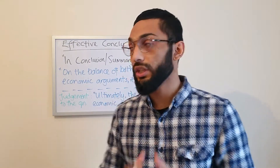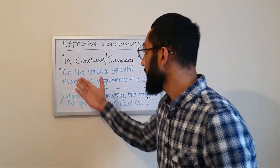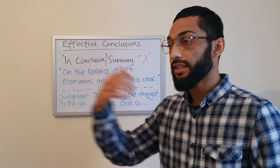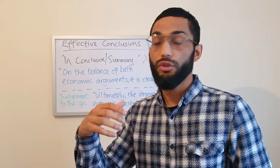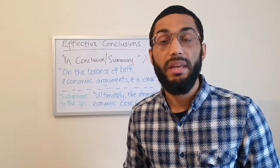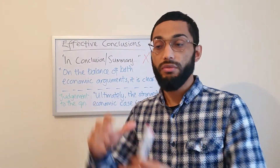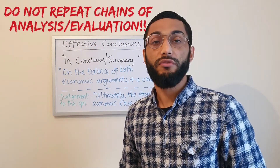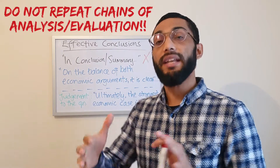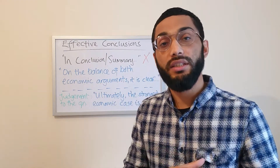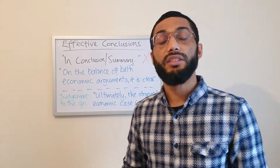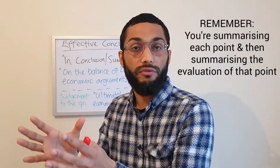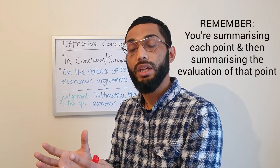Thereafter, crucially, once you've started your sentence with 'the balance of both arguments, it is clear that this point is so-and-so,' you evaluate that and make a statement of evaluation — not literally repeating everything from your economic argument, but then you counterbalance it, show the other side, and summarise the other side of the argument. For example, you have your summary of your point for and then the evaluation on that.